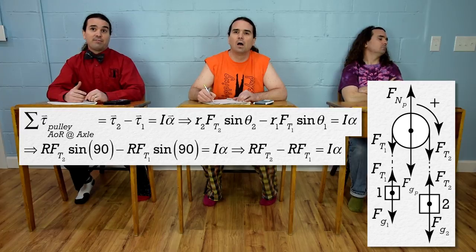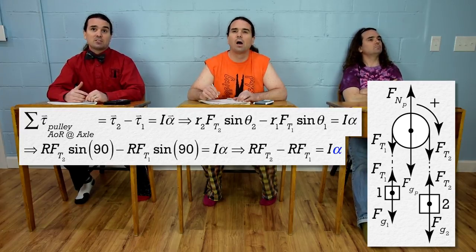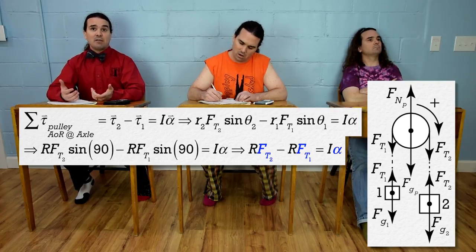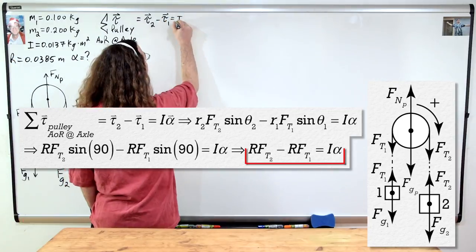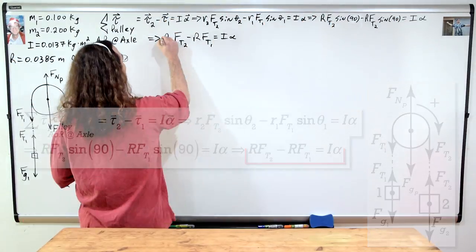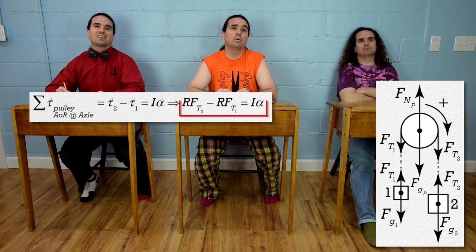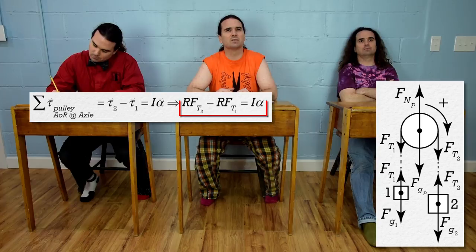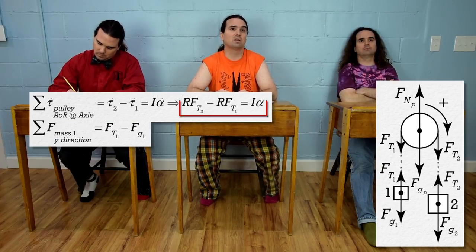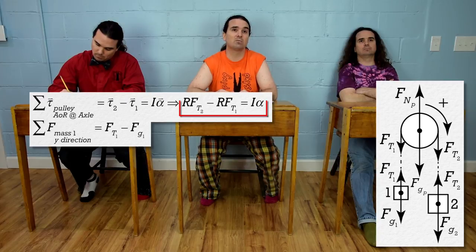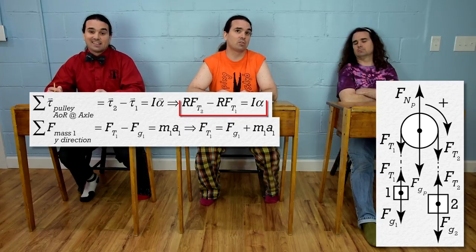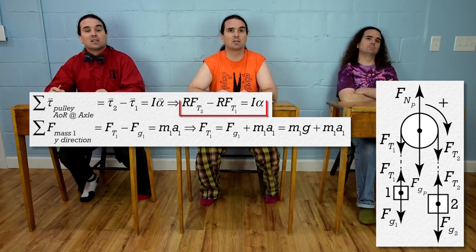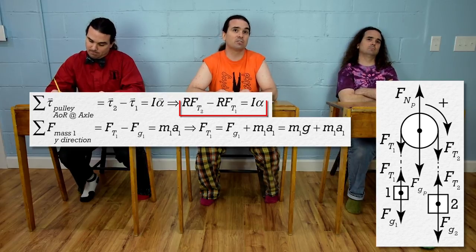In part A we are solving for the angular acceleration of the pulley, and in part B we are solving for both forces of tension — everything is unknown in this equation, so let's put it in our equation holster. Now let's sum the forces on mass 1. The net force on mass 1 in the y direction equals tension 1 minus gravity 1, which equals mass 1 times acceleration 1. Solving for tension 1: force of tension 1 equals mass 1 times acceleration 1 plus mass 1 times g.